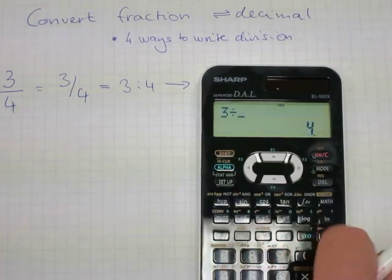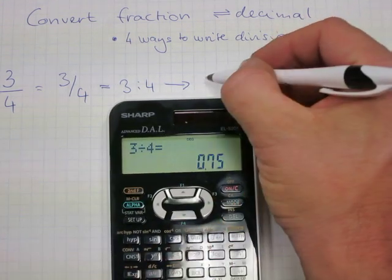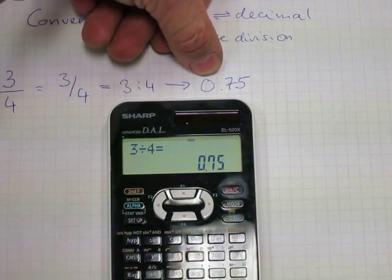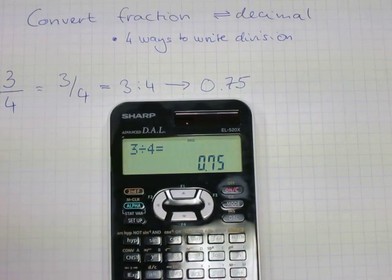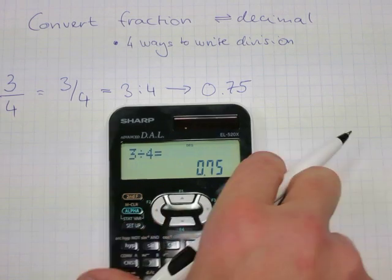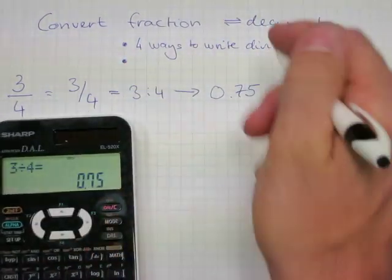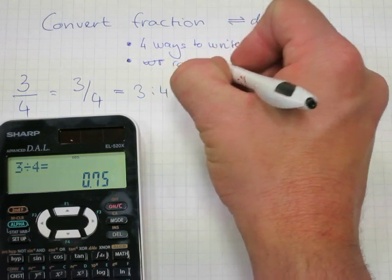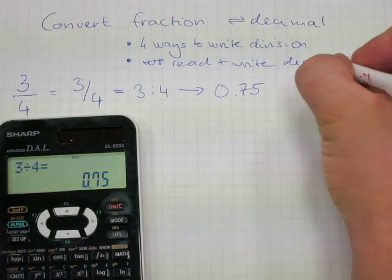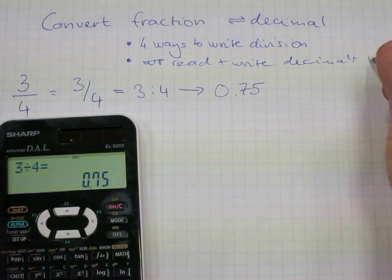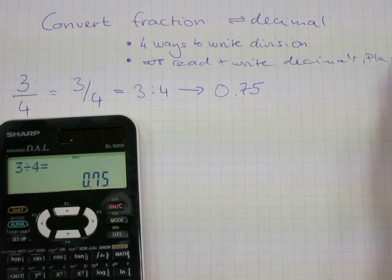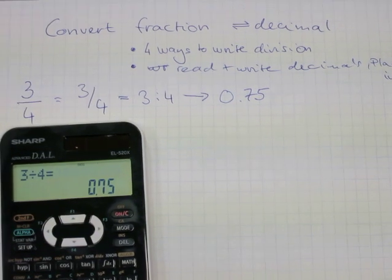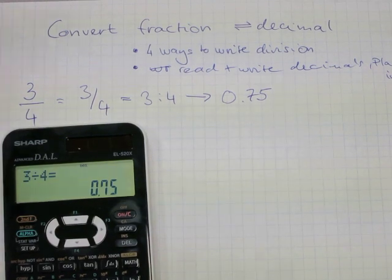You go 3 divided by 4 equals and there you have yourself a happy decimal, 0.75. You read this number either digit by digit as 0.75 or 75 hundredths. And that is demonstrated on another title called read and write decimals and also place value in decimals. Because that's how that number is read, 75 hundredths.